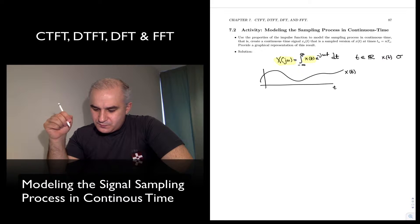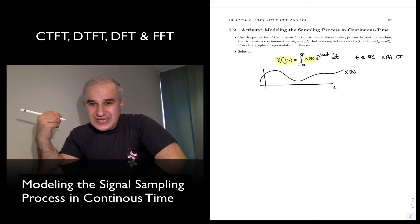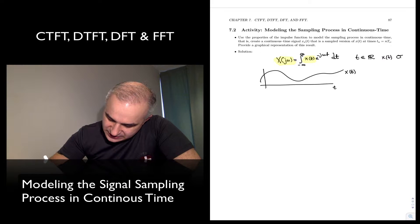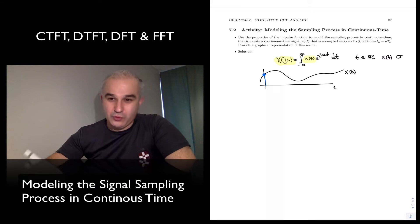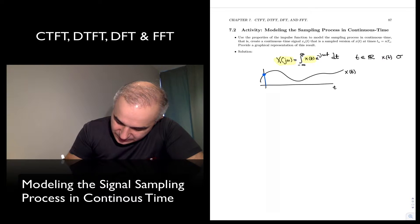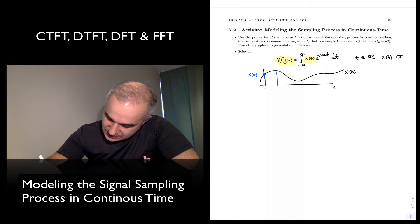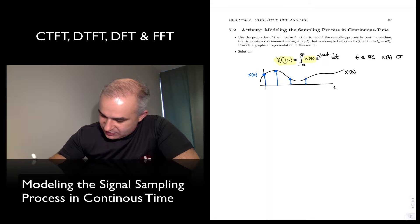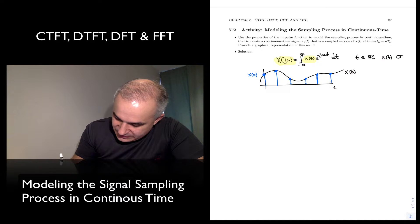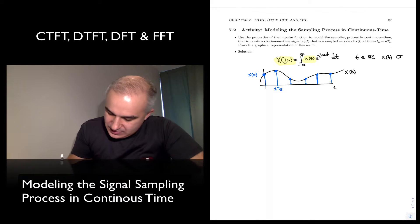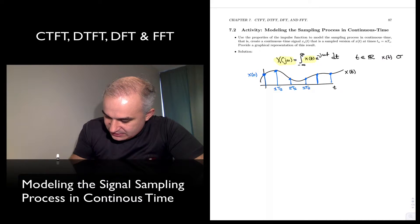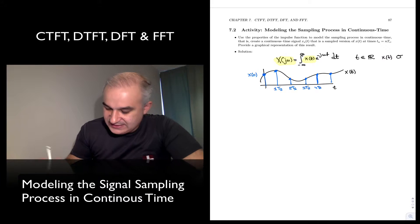Now, what about if we were to sample it? If we were to sample it, this would look something like this. We will take a measurement at x(0), then another measurement, and another, and another — taking measurements at intervals of Ts, 2Ts, 3Ts, 4Ts, and so on.